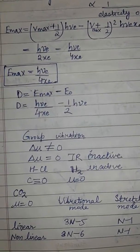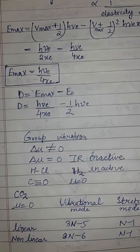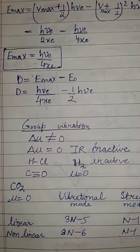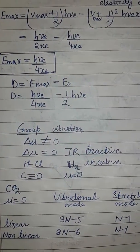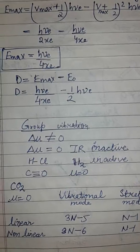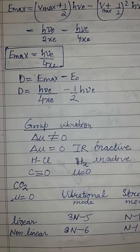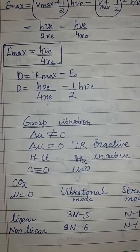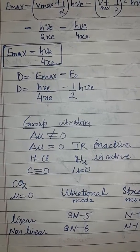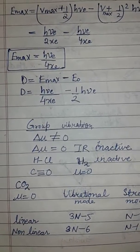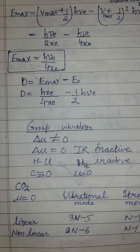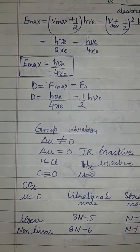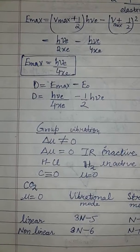To study group vibrations, for a molecule to be IR active it should have a permanent dipole moment. If there is no dipole moment change then it is IR inactive. For example, HCl has a permanent dipole moment so it is IR active, but H2 is inactive. For CO2, there is no dipole moment for a linear molecule.